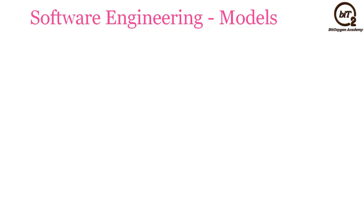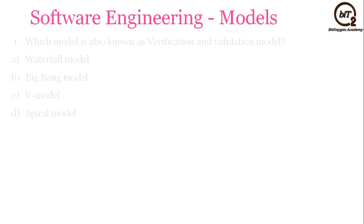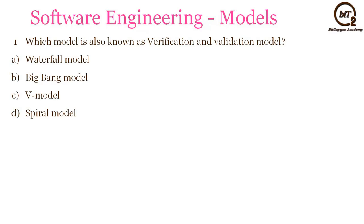The MCQ we will be practicing today will be from the topic Software Engineering Models. The first question is: which model is also known as the Verification and Validation Model? Options: Waterfall, Big Bang, V Model, or Spiral Model. As it is the Verification and Validation Model, the answer will be V Model.